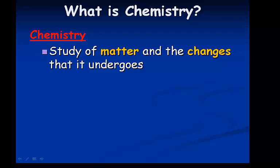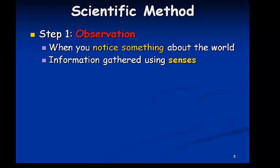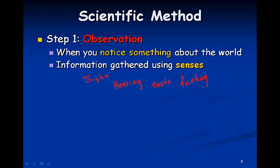The basis of chemistry is the scientific method. The scientific method begins with making an observation. When you make an observation, you notice something about the world. We gather this information using the senses. So we do it by sight, by hearing, by tasting, feeling, etc.